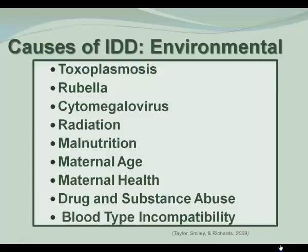Here is a list of more environmental factors that can cause IDD. Many of them you are familiar with: Rubella — German measles — radiation, malnutrition, and how old the mother is. Very young mothers and older mothers can have a higher incidence of children with IDD. Blood type incompatibility is another factor, which is why we should have prenatal care.